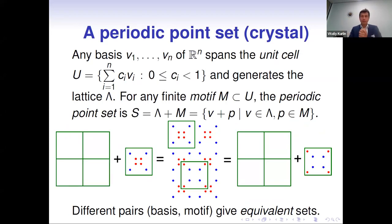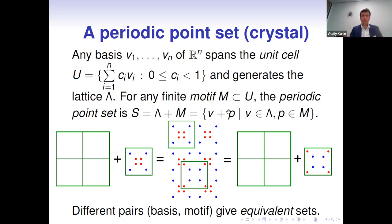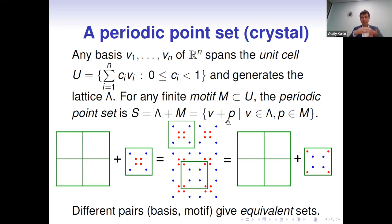For a periodic crystal, mathematically we consider periodic point sets. Similarly, we start from a linear basis defining a unit cell — a parallelogram in two dimensions. In addition, to define periodic points we need a finite motif of points in this unit cell — centers of atoms or molecules. We then generate from this finite motif and the lattice a Minkowski sum, forming a larger infinite periodic point set.